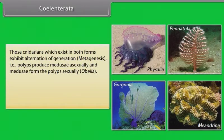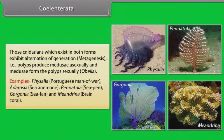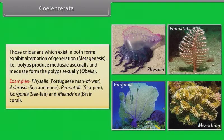Examples of Cnidarians include: Obelia, Physalia (also known as Portuguese man-of-war), Adamsia (also known as sea anemone), Pennatula (also known as sea pen), Gorgonia (also known as sea fan), and Meandrina (also known as brain coral).